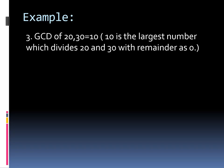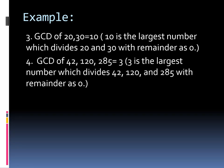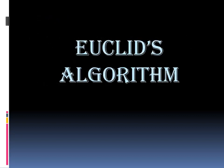For example, GCD of 20 and 30 is equal to 10. So 10 is the largest number which divides 20 and 30 with remainder zero. And for example number four, GCD of 42, 120, and 285 equals 3. So 3 is the largest number which divides 42, 120, and 285 with remainder zero.